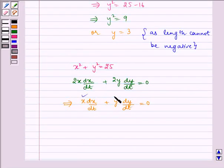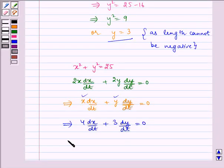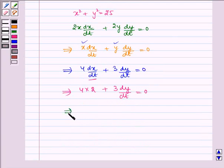Now, substituting the values of x and y, we get 4(dx/dt) + 3(dy/dt) = 0. Also, dx/dt is given as 2, so 4 times 2 plus 3(dy/dt) equals 0. This implies 3(dy/dt) = minus 8, giving dy/dt = minus 8/3.